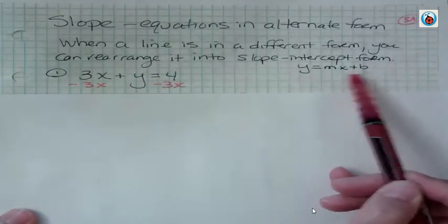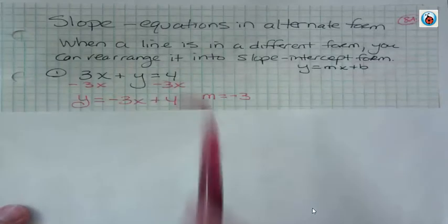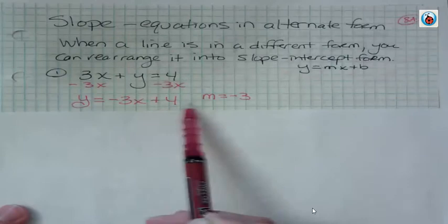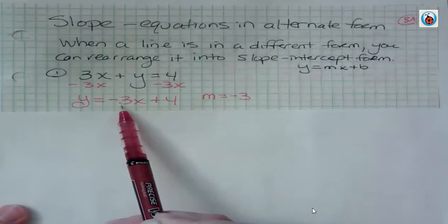the x term, followed by b. So I have y equals negative 3x plus 4. Now when it's in this format, I can clearly see the slope is negative 3.